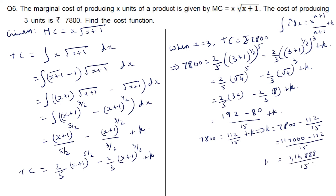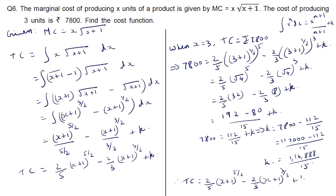This is the value of k. Substituting back into the total cost function, therefore the total cost function is given by 2 by 5 times (x plus 1) raised to 5 by 2 minus 2 by 3 times (x plus 1) raised to 3 by 2 plus 116888 upon 15. So this is the total cost function.